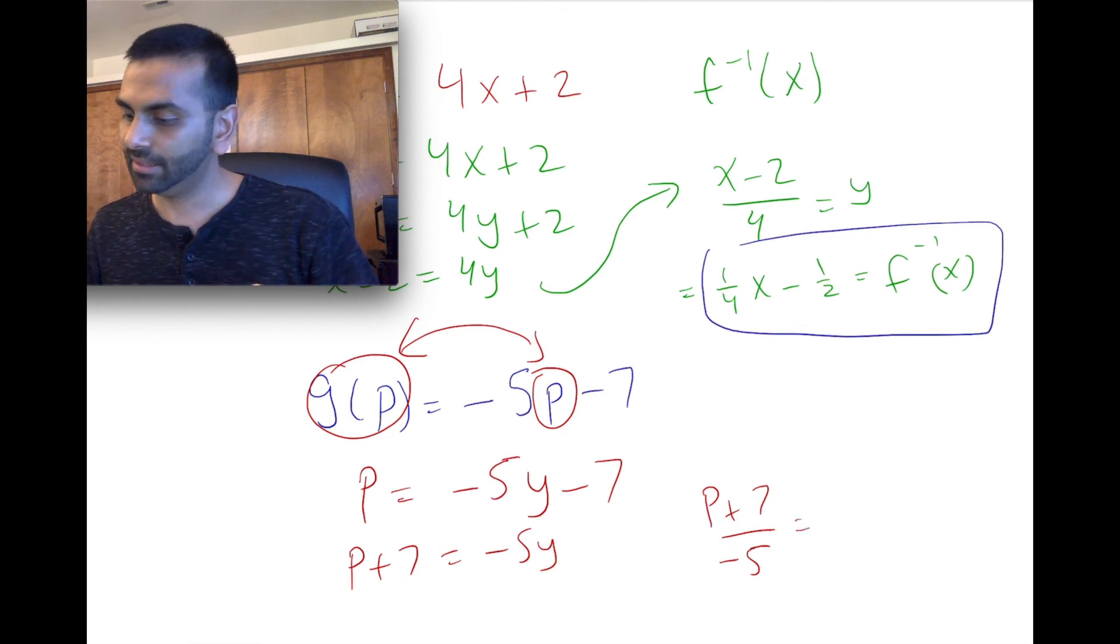And that's still just a line. But that equals your original input of p. And so that's going to be the notation is g inverse of p.